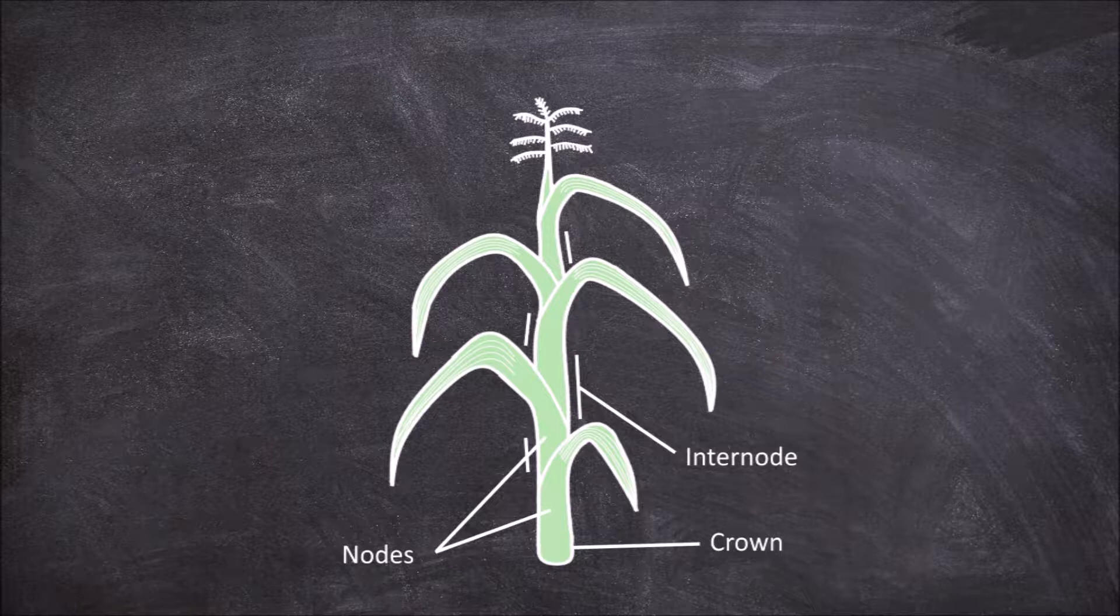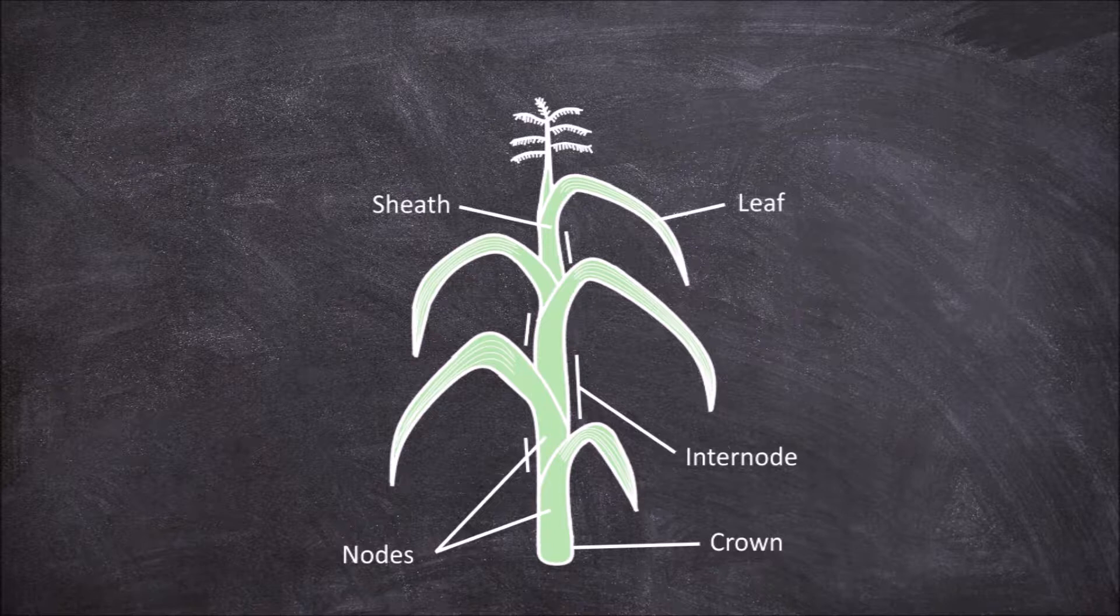From each node the leaf forms a sheath going up the stem before moving out away from the stem. The top of the stem culminates with the flowering organ.